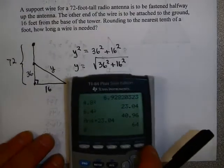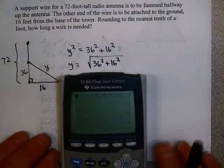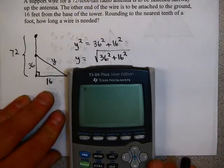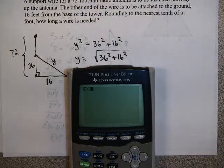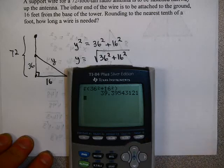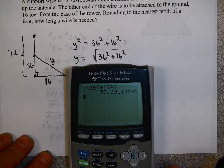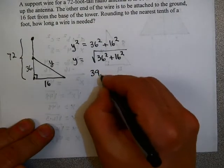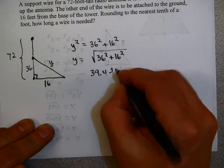Now, I left it like this because I want to point out that on your calculator, you can easily do this whole problem in one step. I could take square root, notice the parentheses is already there, 36, hit x squared, plus 16, hit x squared, end parentheses, hit enter, and you get about 39.395. It said round to the nearest tenth, so that's 39.4 feet. So that helps us answer that question.